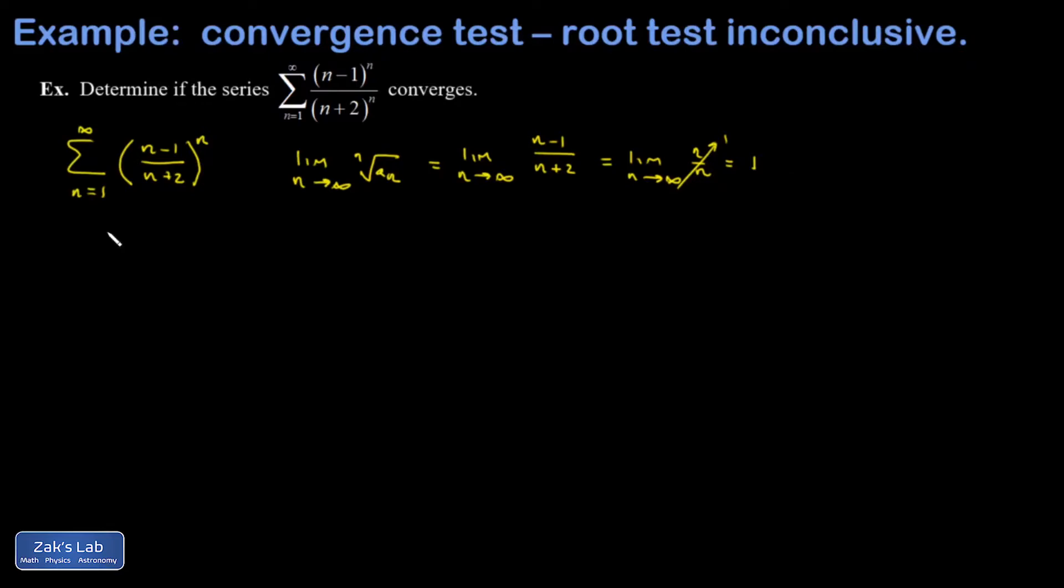Instead of looking at it that way, I go back and look at my original series. That thing in parentheses is getting really close to 1. It's the exact same limit we just took. And then I'm raising it to a really large power. If I'm taking something pretty close to 1 and raising it to a really large power, it makes me think that my terms might be going to something finite here. That I might fail the divergence test. That's my next thing to try.